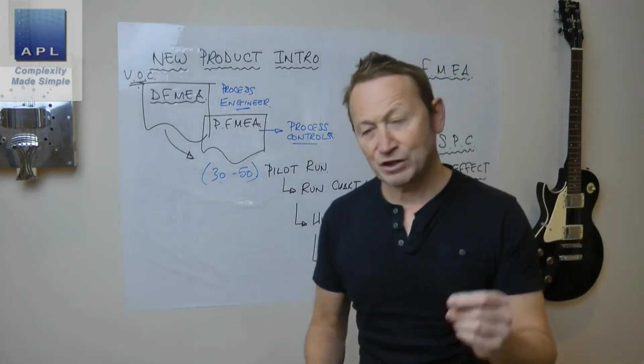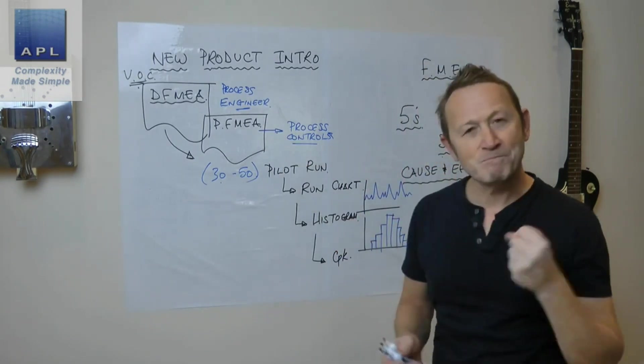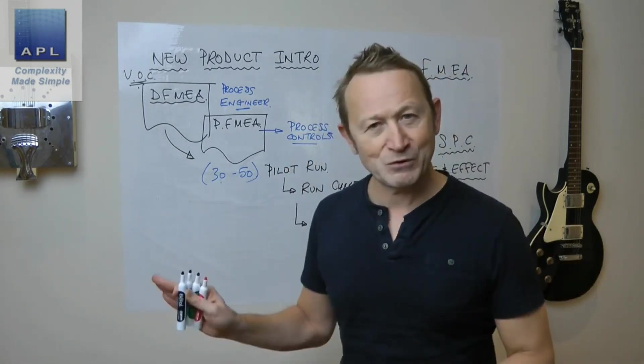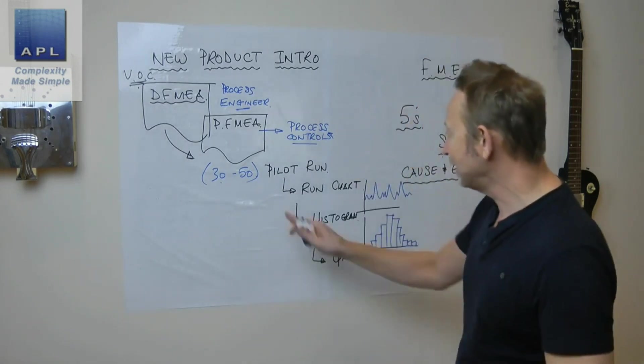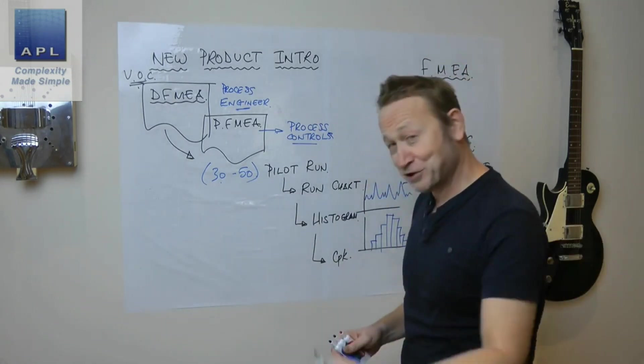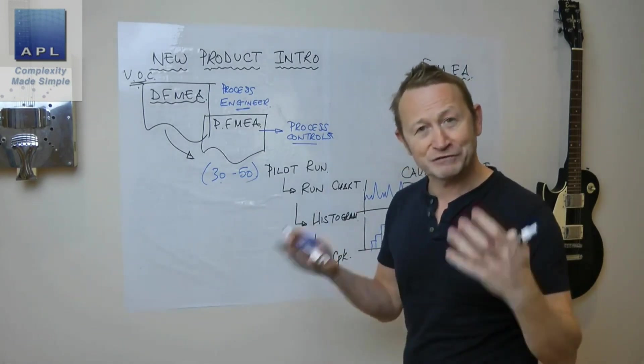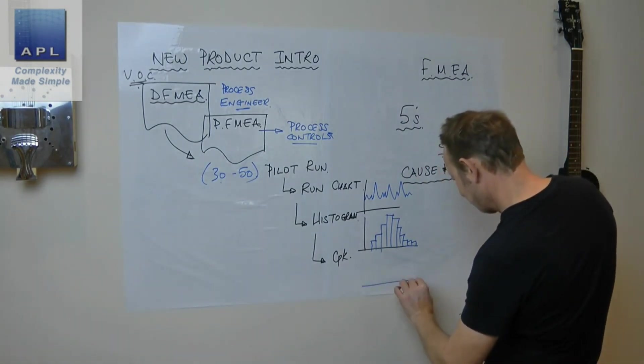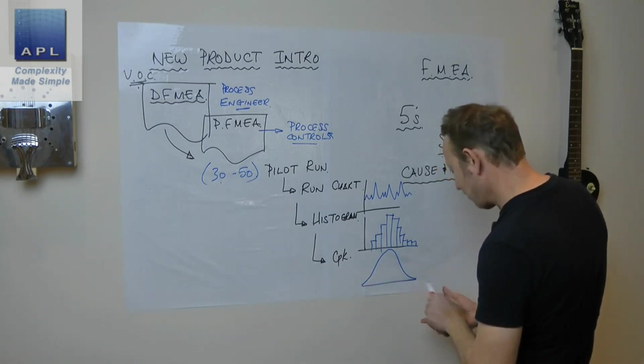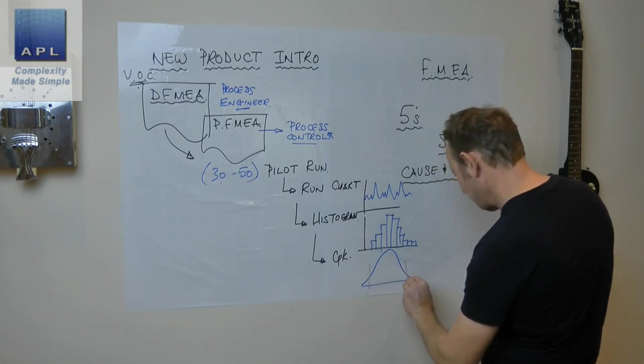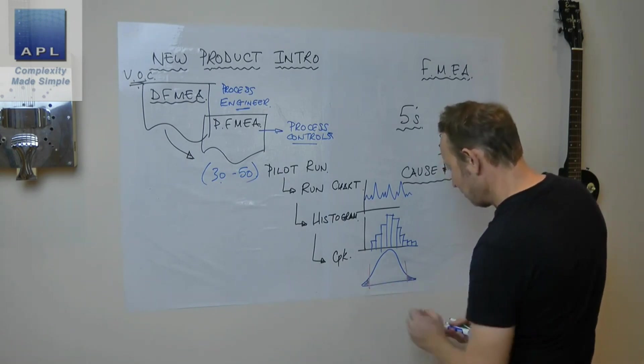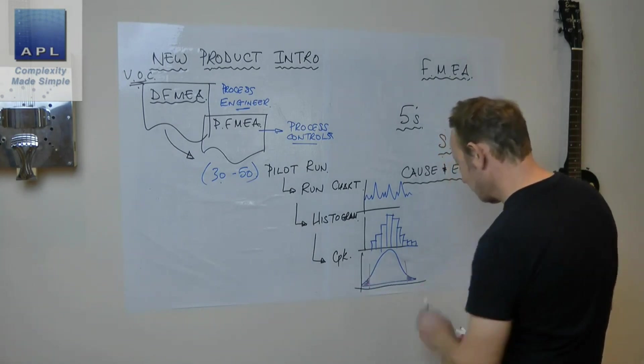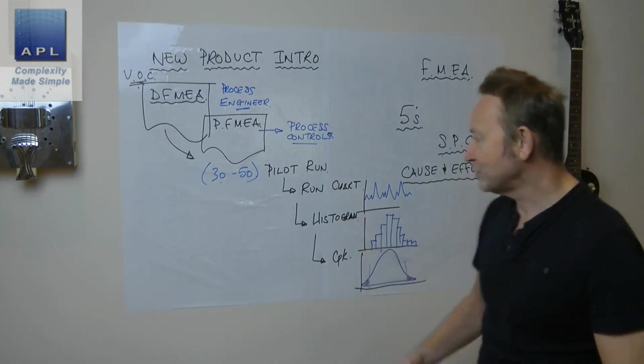And then finally, CPK diagram. I'm always going to use these three together like this if I've got measurable data tolerances that I'm trying to work out the capability. Can we make the product? It's a really important question to ask before you switch the process on live and create piles of scrap and chaos. So the last one, CPK diagram. What kind of defect rate do we have? CPK diagram, run chart, histogram, CPK.